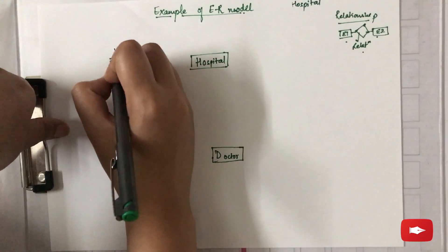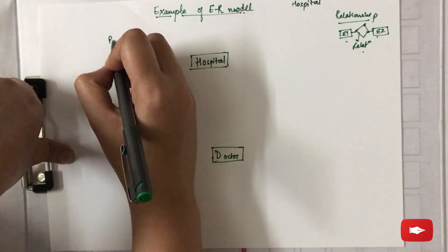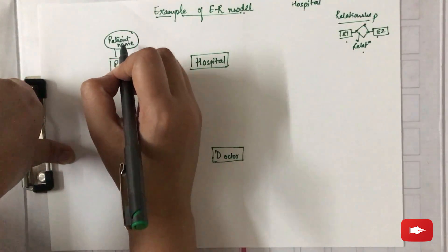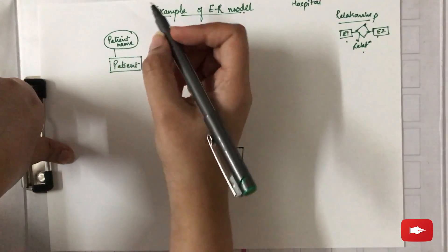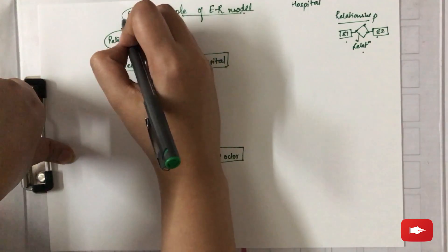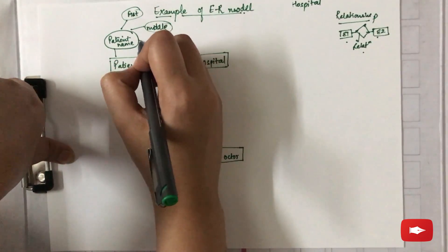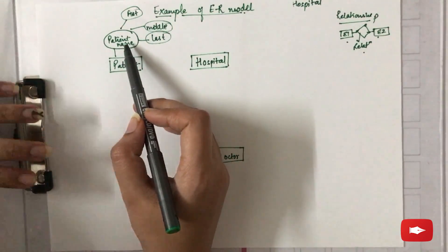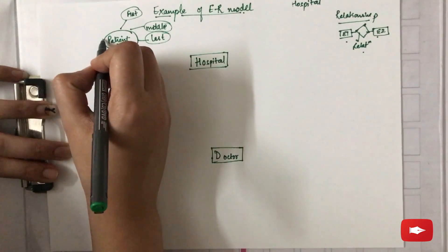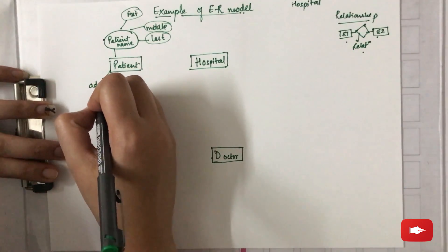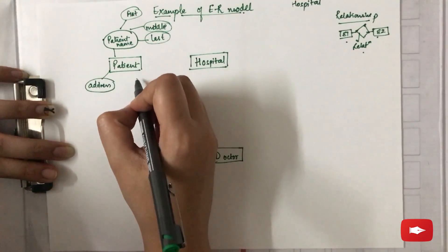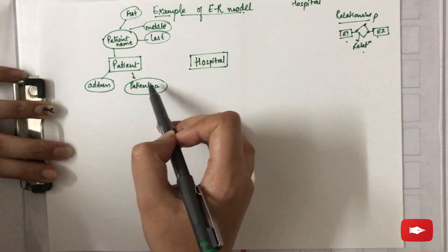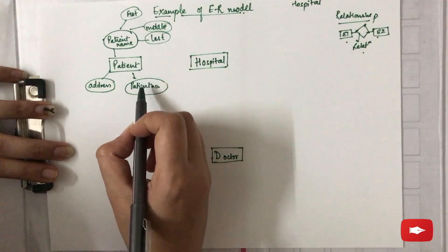Now we need to think about the attributes of these entities. Starting with patient, a patient can have a patient name. As we've already seen in the previous video, name is a composite attribute which can further be divided into first, middle, and last name — the subparts are attached to the main attribute. The patient can also have an address and a patient number.